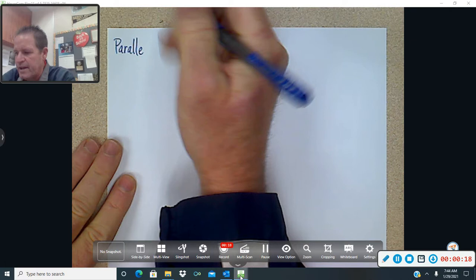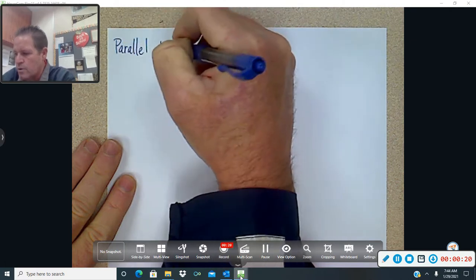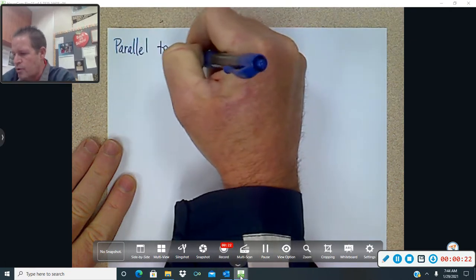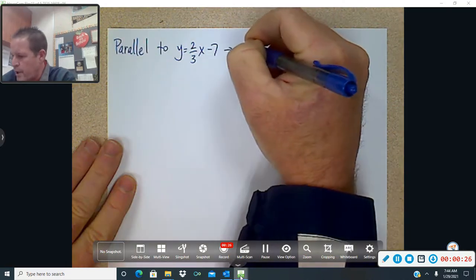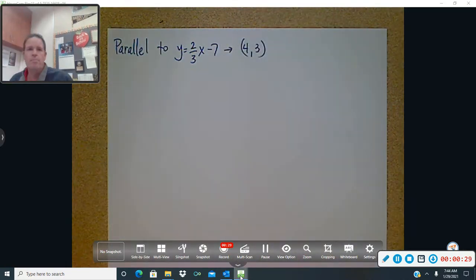So I want to find a line parallel to y equals 2 thirds x minus 7, passing through the point 4, 3. And I'm going to put in all three forms. When you do the worksheet today, make sure you read what form it wants, because I don't have on every question all three forms.